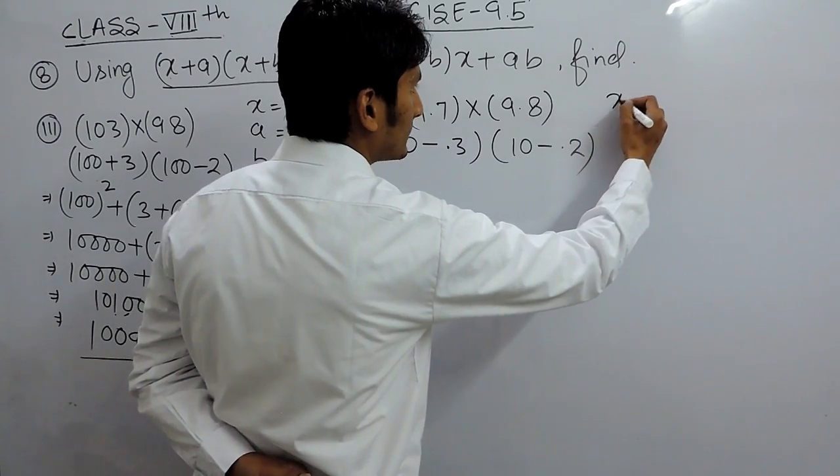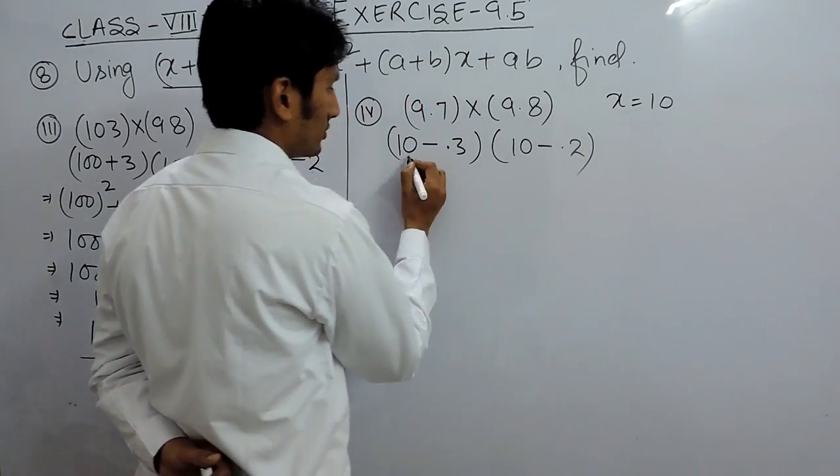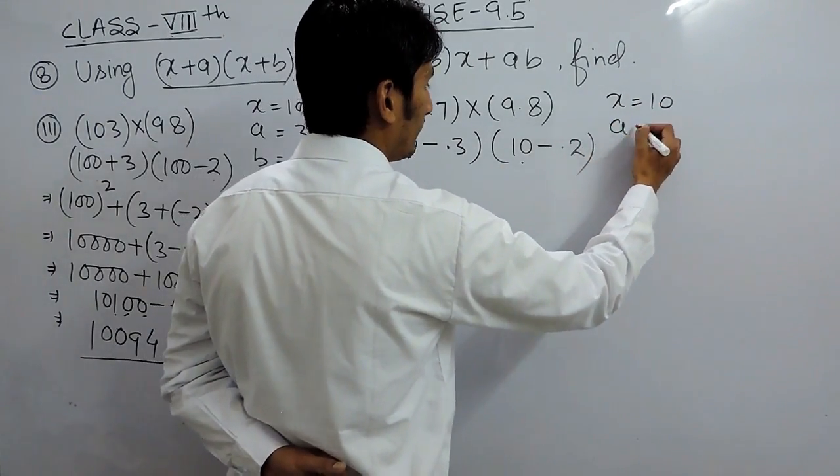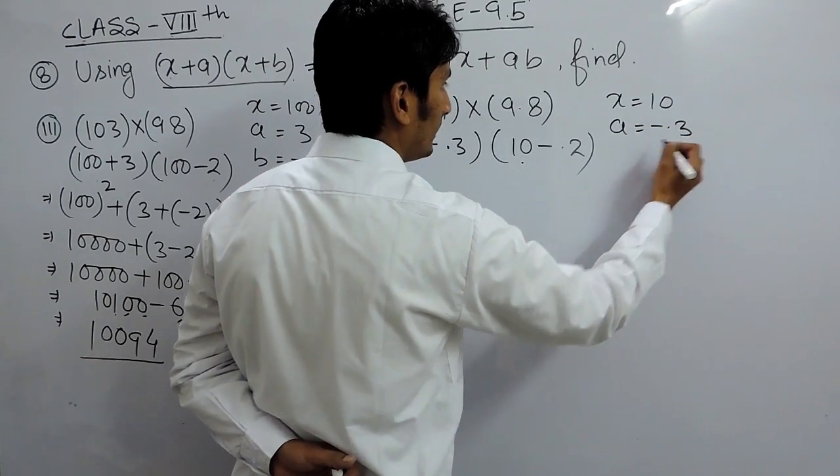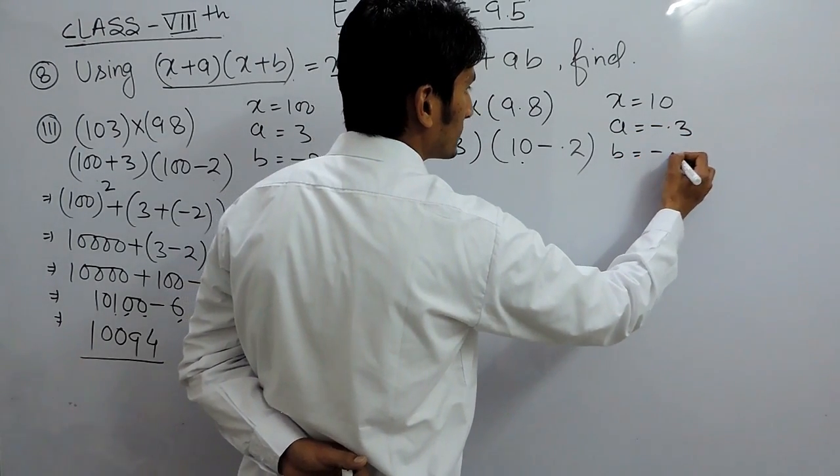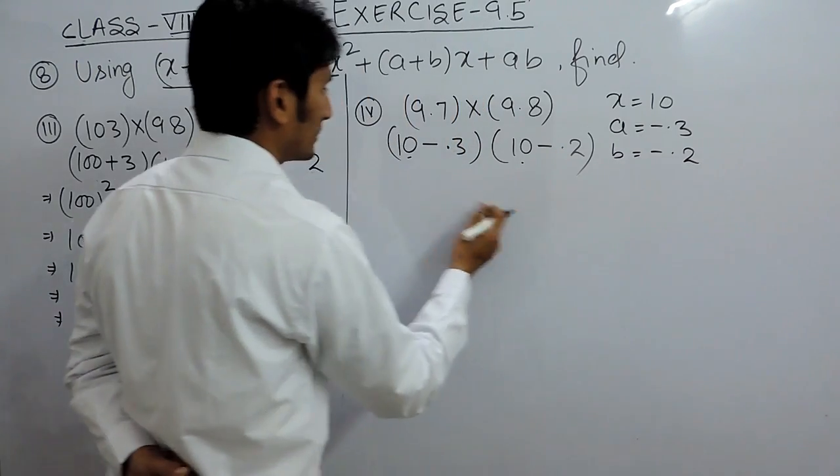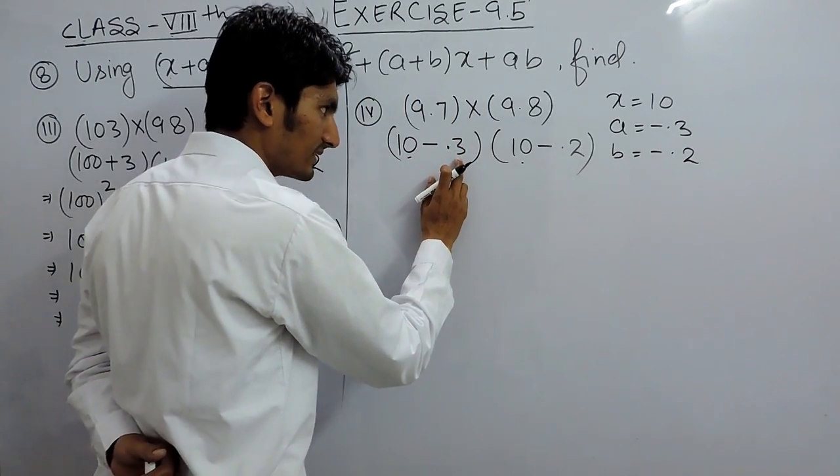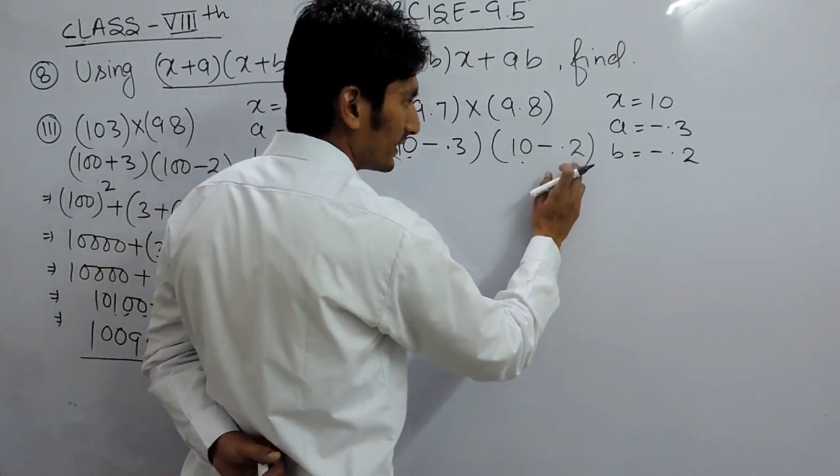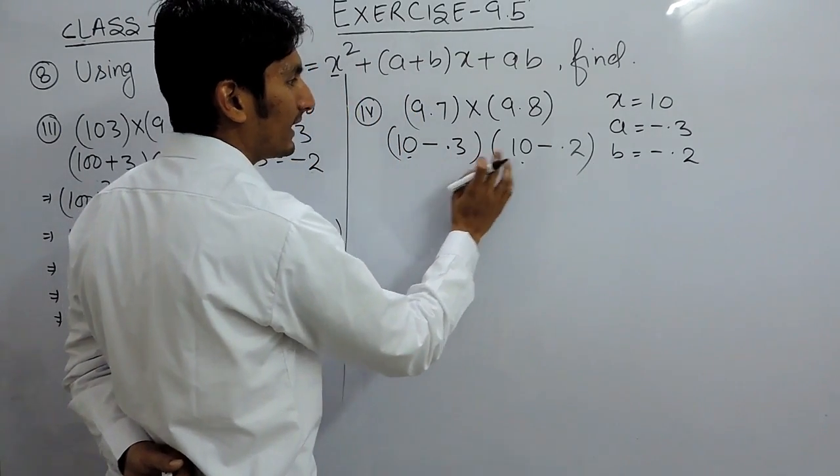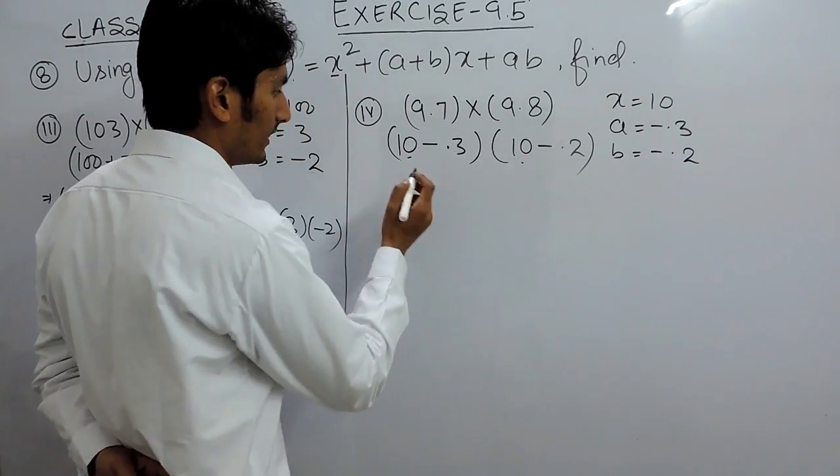Here our x becomes 10. Our a becomes minus 0.3 and our b becomes minus 0.2. So this is x plus a and this is x plus b, where a and b are minus 0.3 and minus 0.2.